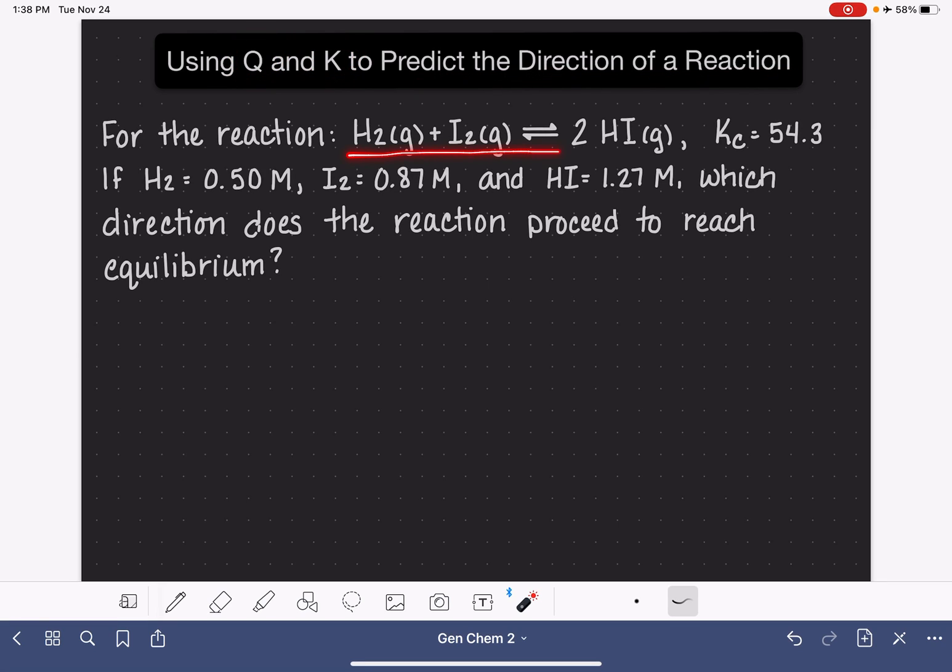We're going to be using this reaction as our example, and we have the equilibrium constant for this reaction. We're being given some concentrations of all three molecules in this reaction, and we're being asked to predict which direction the reaction proceeds in order to get itself to equilibrium.